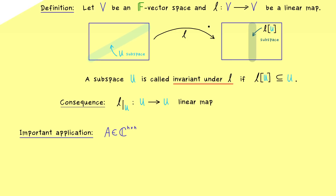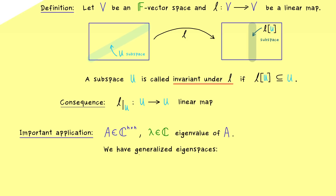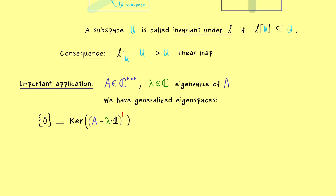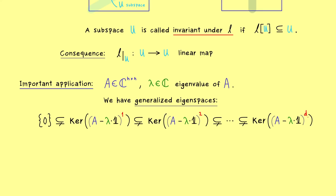Our linear map L is given by a square matrix A, and such a matrix has at least one eigenvalue in ℂ. Let's fix one and call it lambda. From the last video we learned that we have so-called generalized eigenspaces that form a chain — kernels which increase at each step. The first one is just the ordinary eigenspace, which is non-trivial. We increase the power until we reach the so-called fitting index d. If we consider a kernel with an even higher power, it does not change. The minimal fitting index is 1 and the maximal is n, so d always lies between 1 and n.